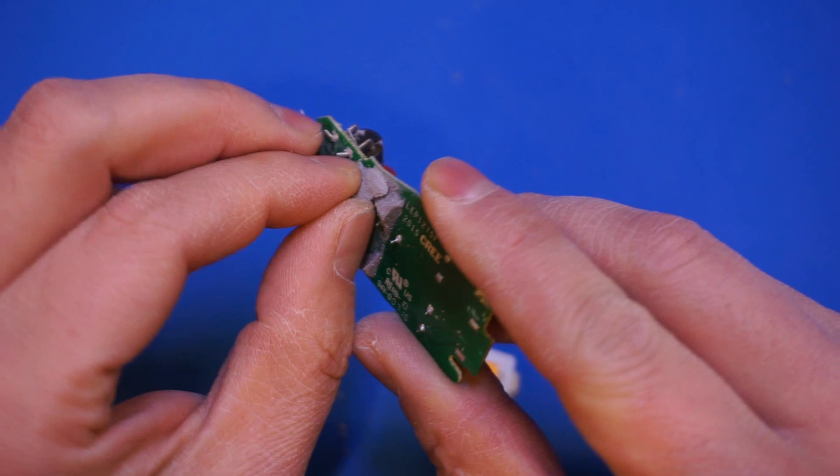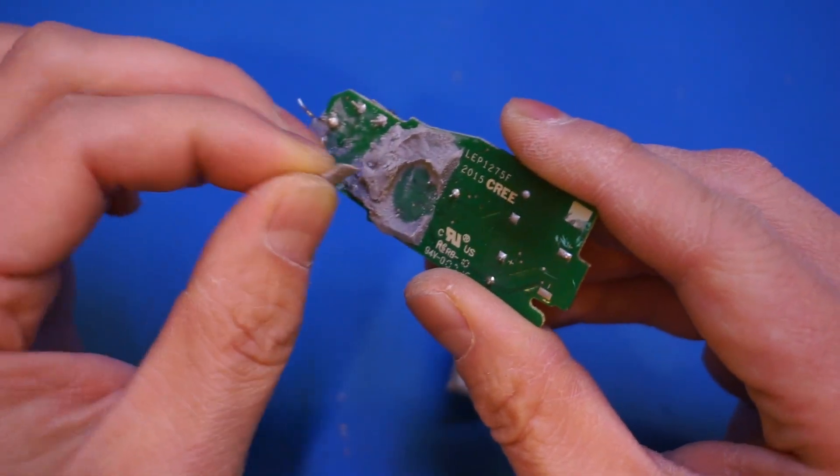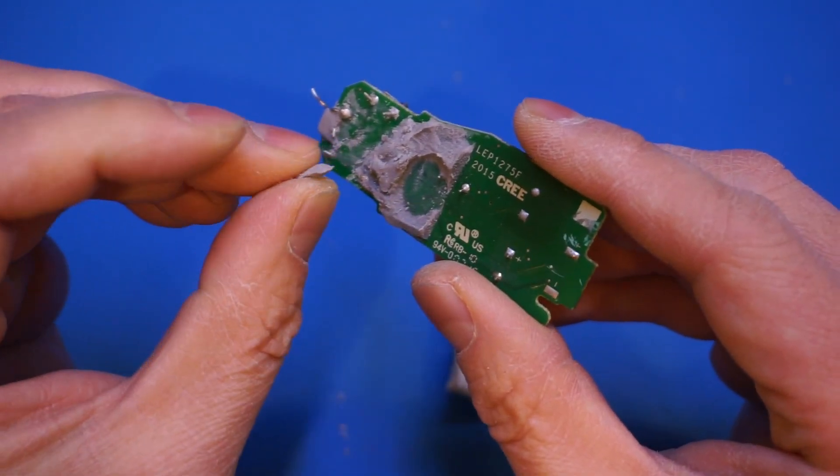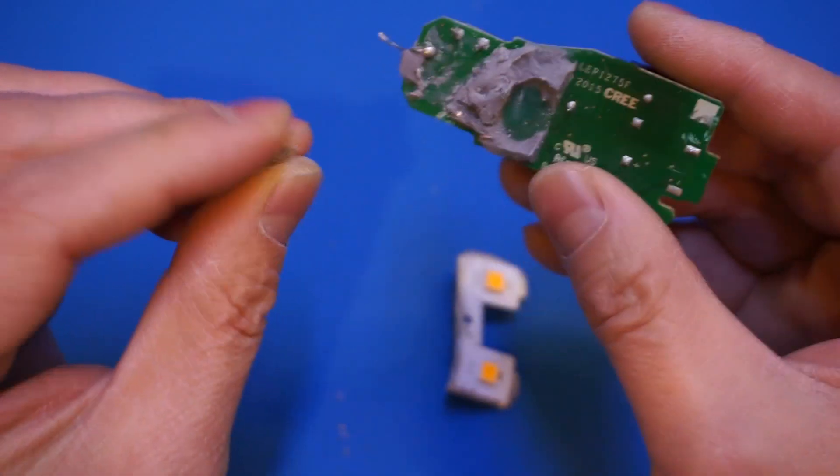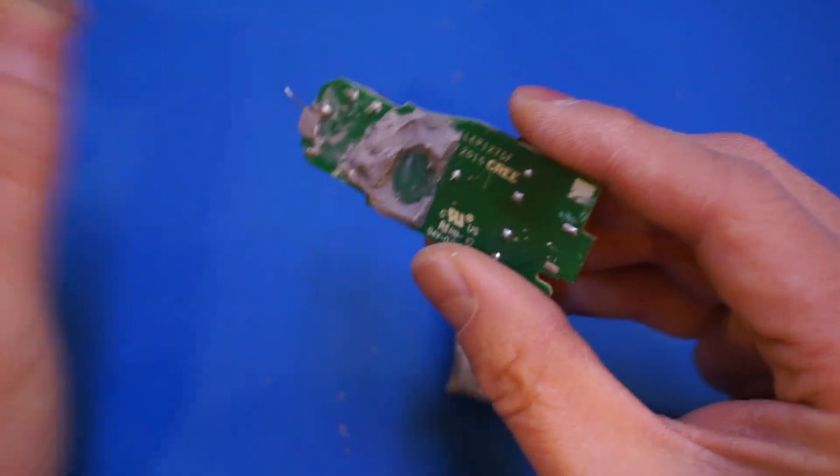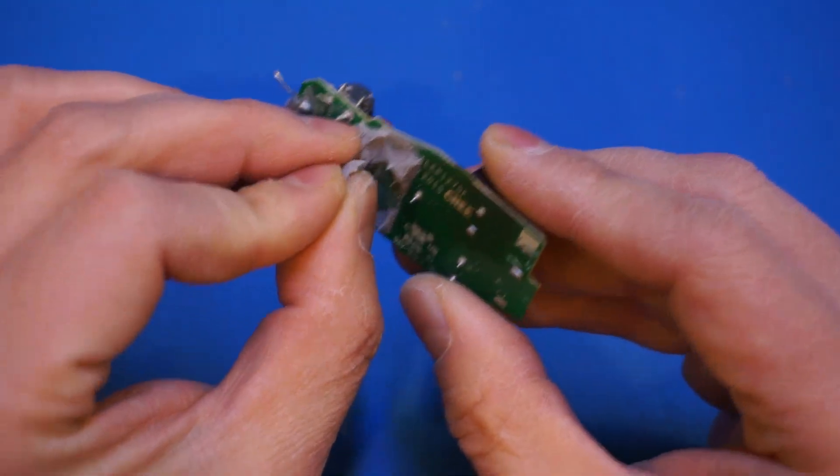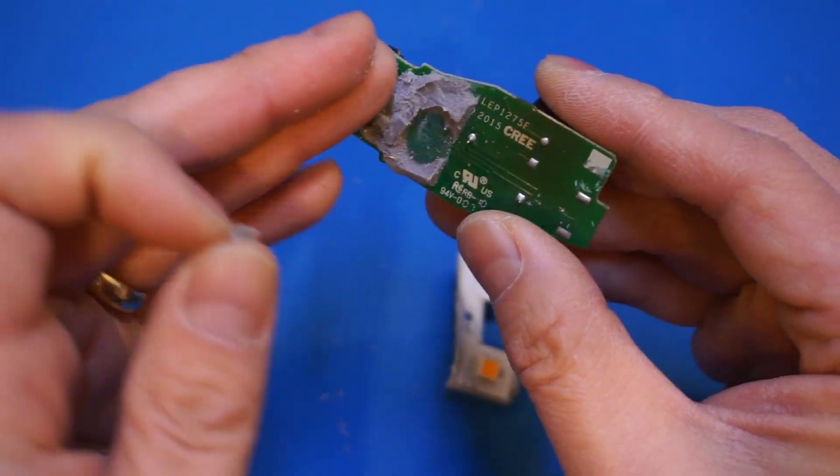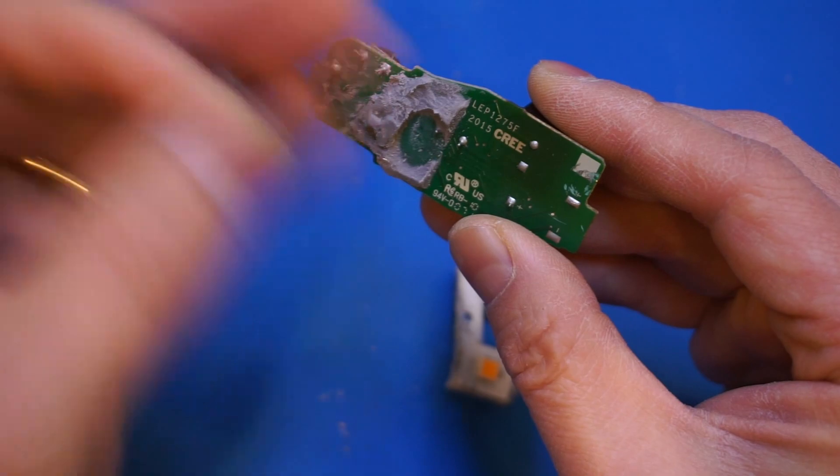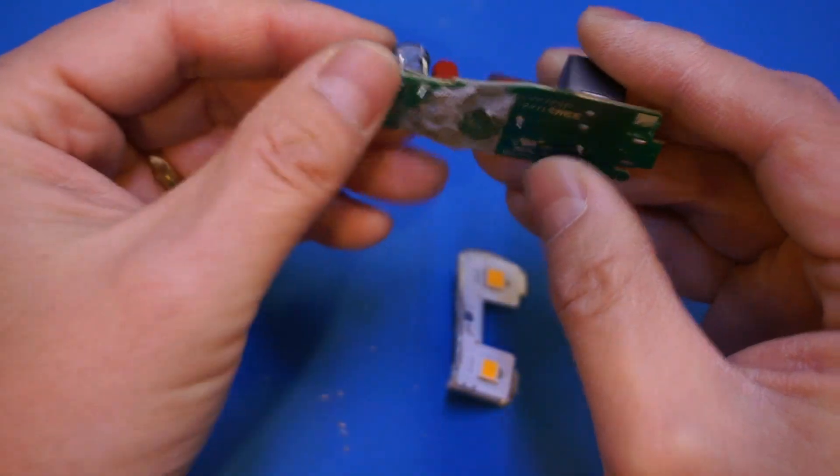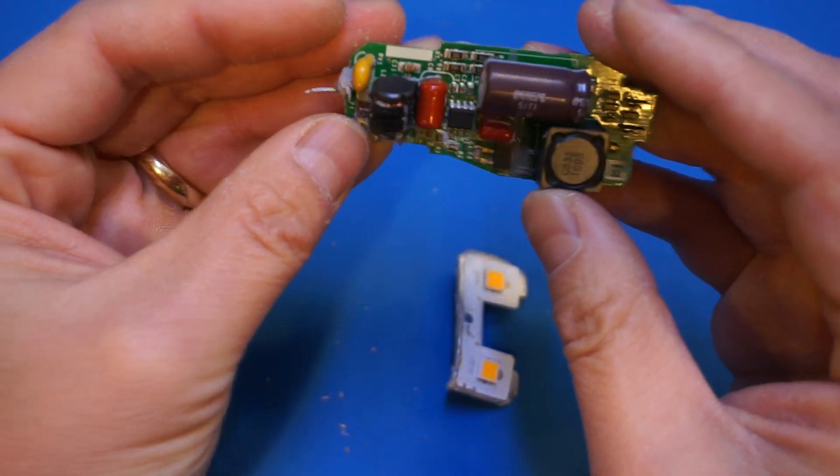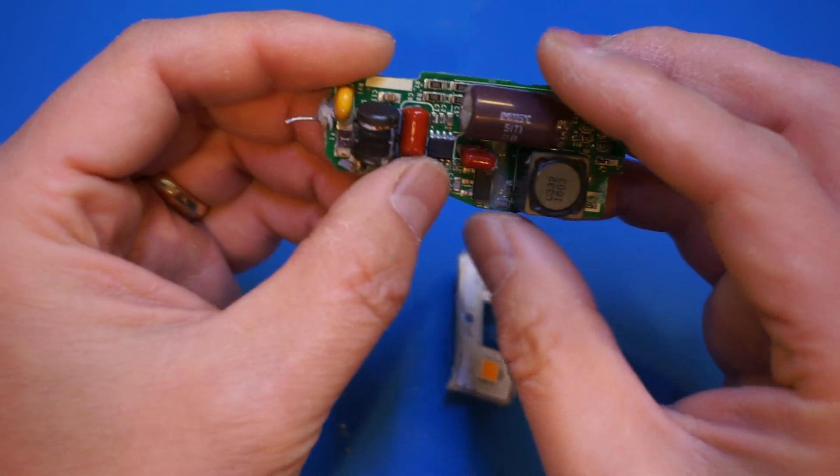So on the back here, we can see that this board is designed by Cree and is a 2015 model. There's still some of this potting material, which is very hard to work with when you try to Dremel it. But the best way to get rid of this is just use a knife to cut off the layers, cut it off layer by layer.